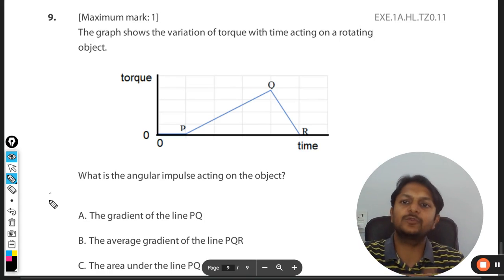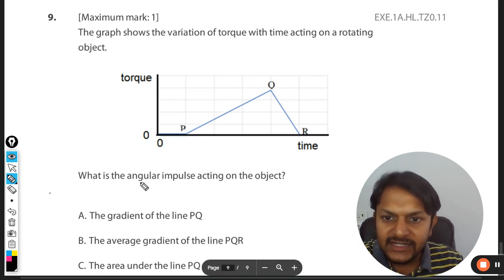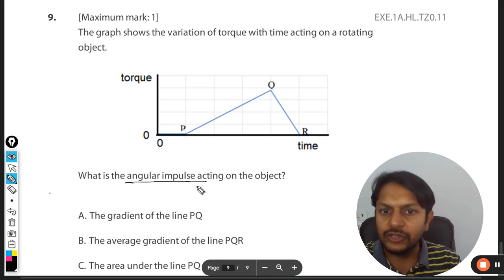Okay, let's see what is there in this question. The graph shows the variation of torque with time acting on a rotating object. What is the angular impulse acting on the object? Now you want to find the impulse.